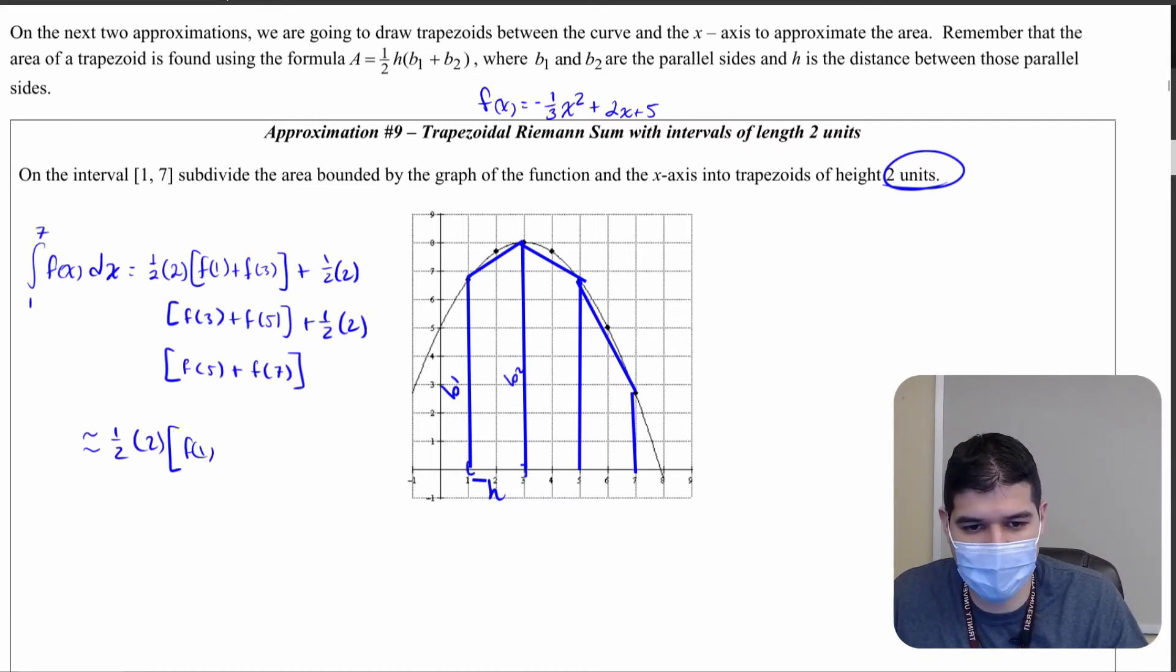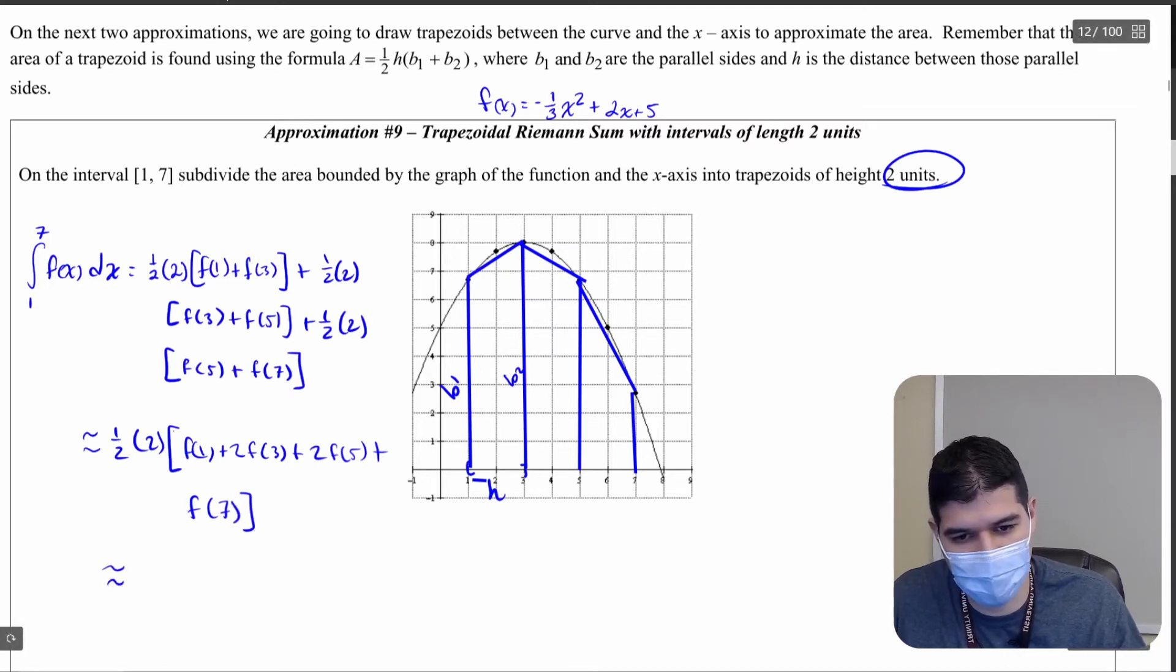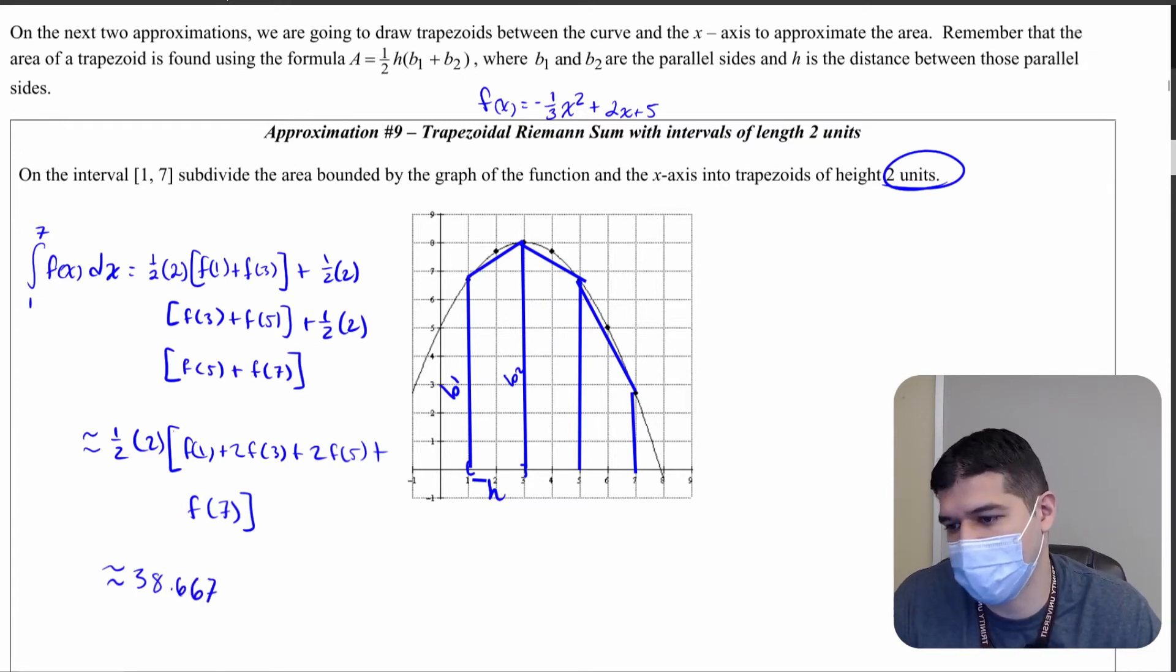And then I have two f of fives and then I have one f of seven. So we're going to make our calculation. We're going to approximately come out to 38.667. Go ahead and type it into your calculator to actually confirm that, but that's how you use trapezoidal sums.